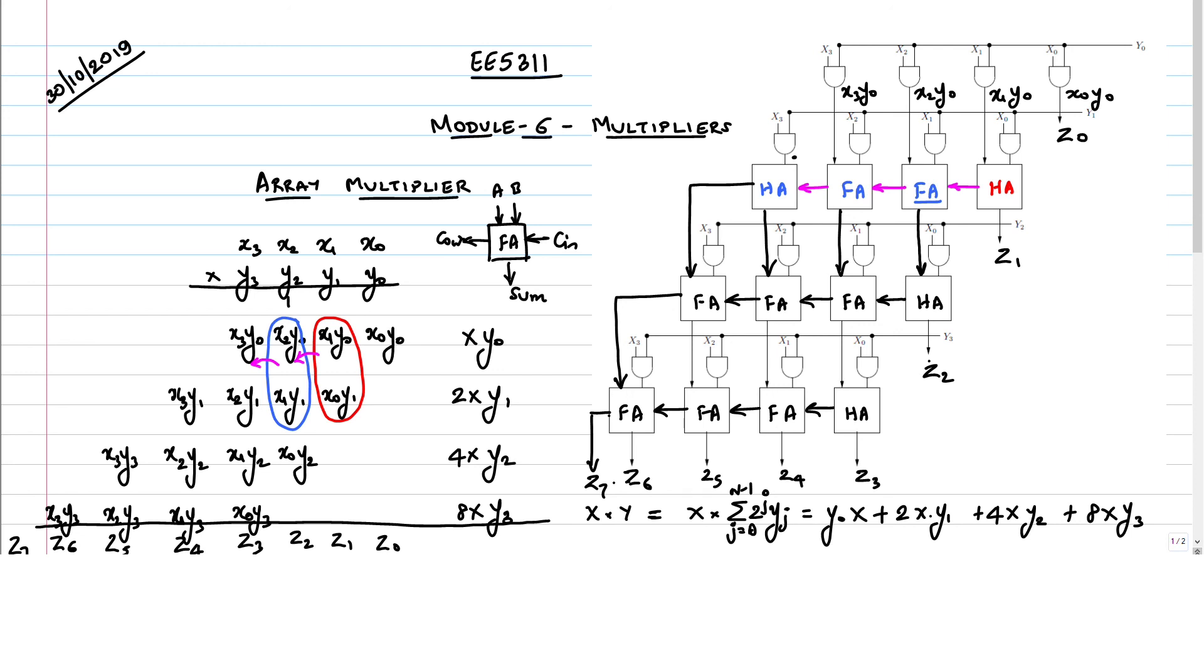In order to perform 4 cross 4 multiplication, how many half adders or full adders do I need? N into N minus 1. Therefore you need N into N minus 1 full adder effectively.